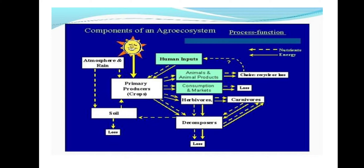The components of an agro-ecosystem: from sunlight, the crops act as primary producers. Nutrient and energy are received from human input. Crops transfer nutrient and energy to animals and animal products, then energy and nutrients flow to consumption and market. Some decomposition occurs, and from animals and animal products, recycling or losses may happen at the consumption and market stage, including losses to herbivores.